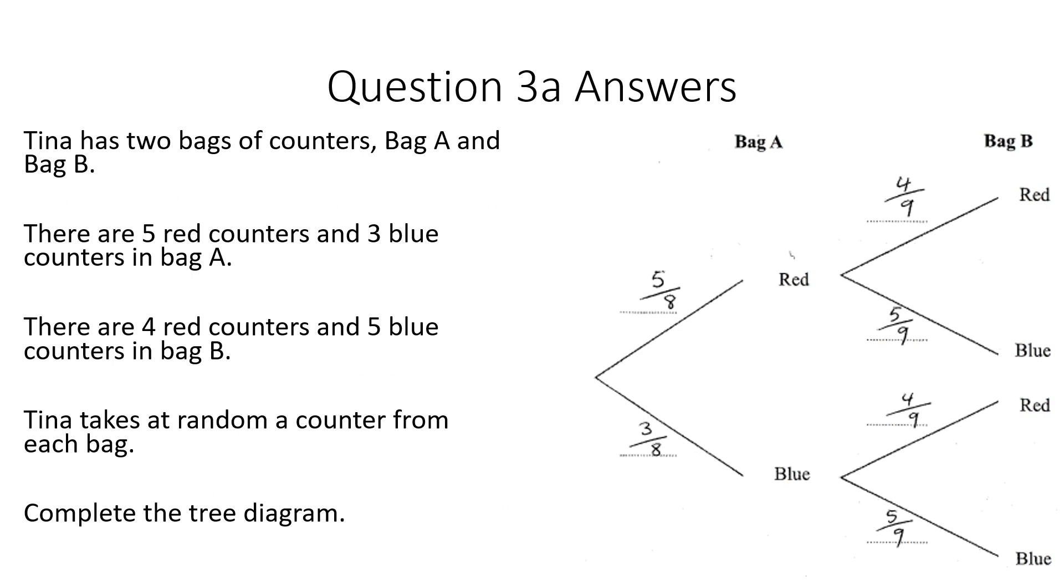Okay and here is your solution to this. So we've got five out of eight there. So five eighths for the red counters. Three eighths for the blue counters. And then for bag B it was out of nine. So four out of nine. So four ninths for the red and five ninths for the blue.